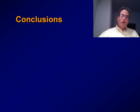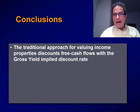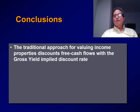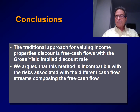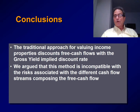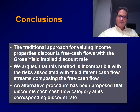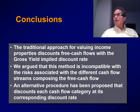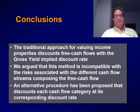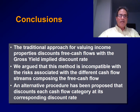So let's conclude. The traditional approach for valuing income properties discounts free cash flows with the gross yield implied discount rate. We argue that this method is incompatible with the risks associated with the different cash flow streams that compose the free cash flow. An alternative procedure has been proposed that discounts each cash flow category at its corresponding discount rate. Thank you.